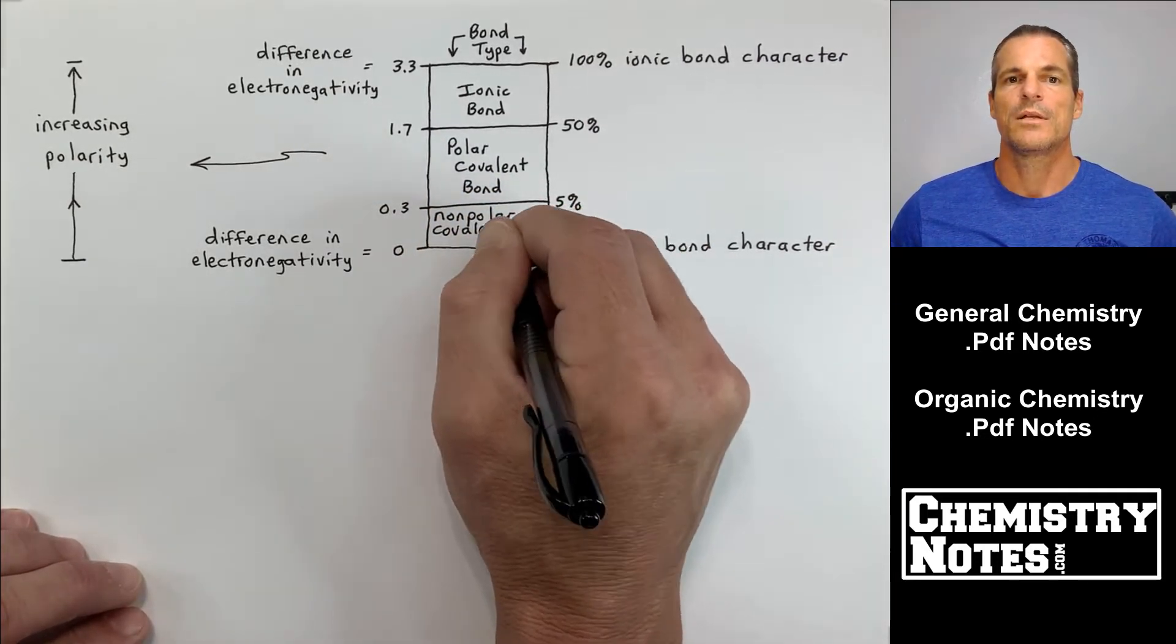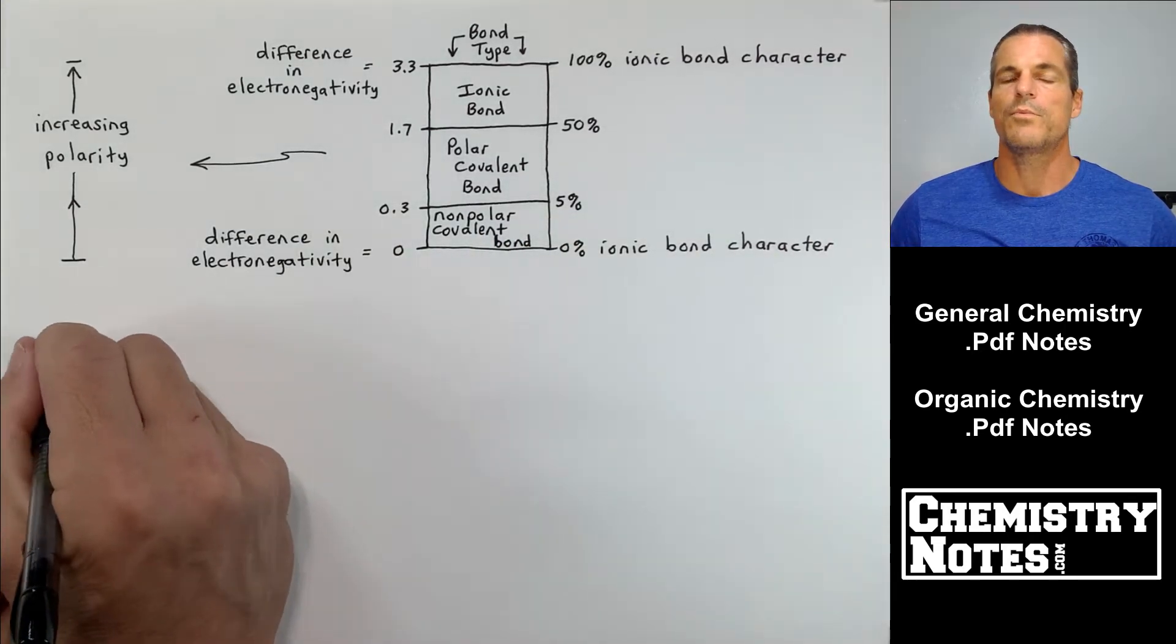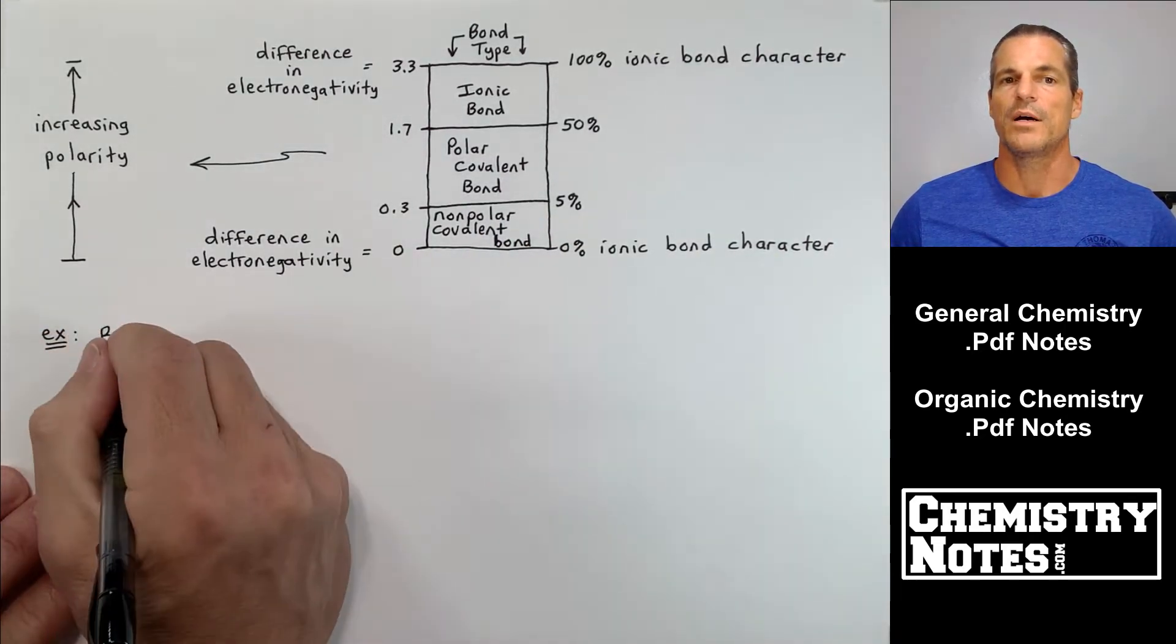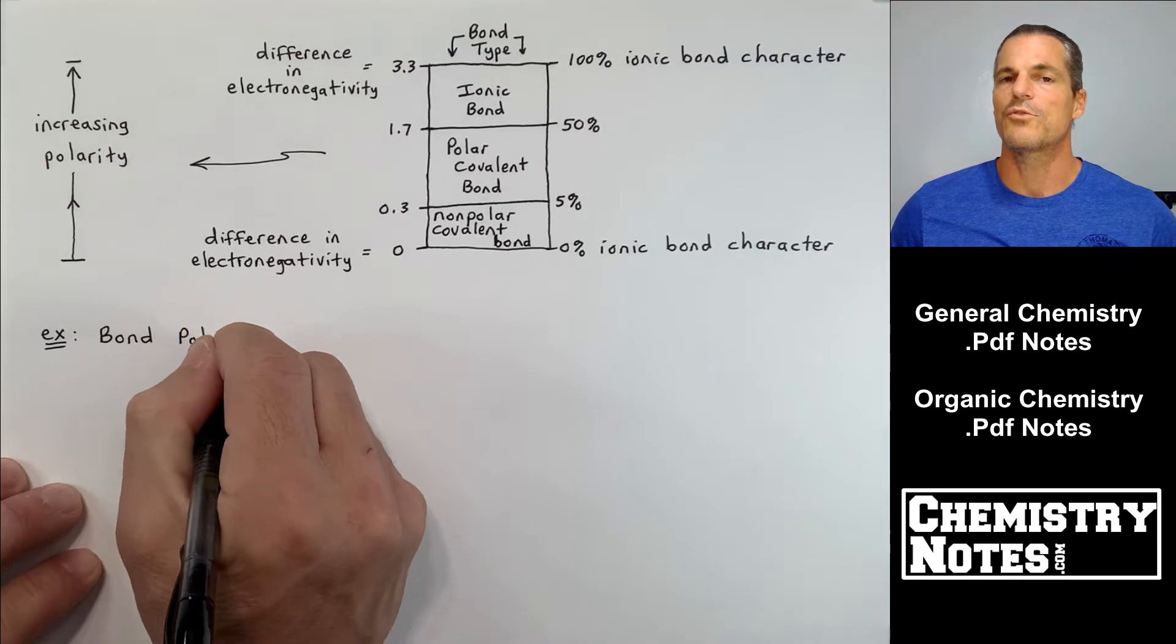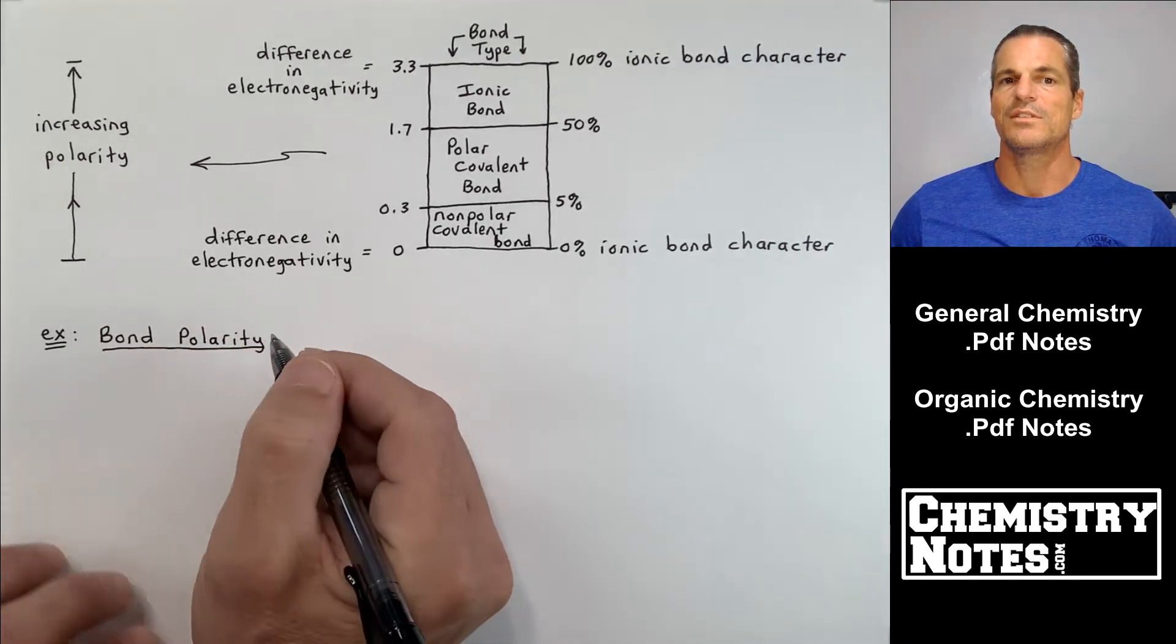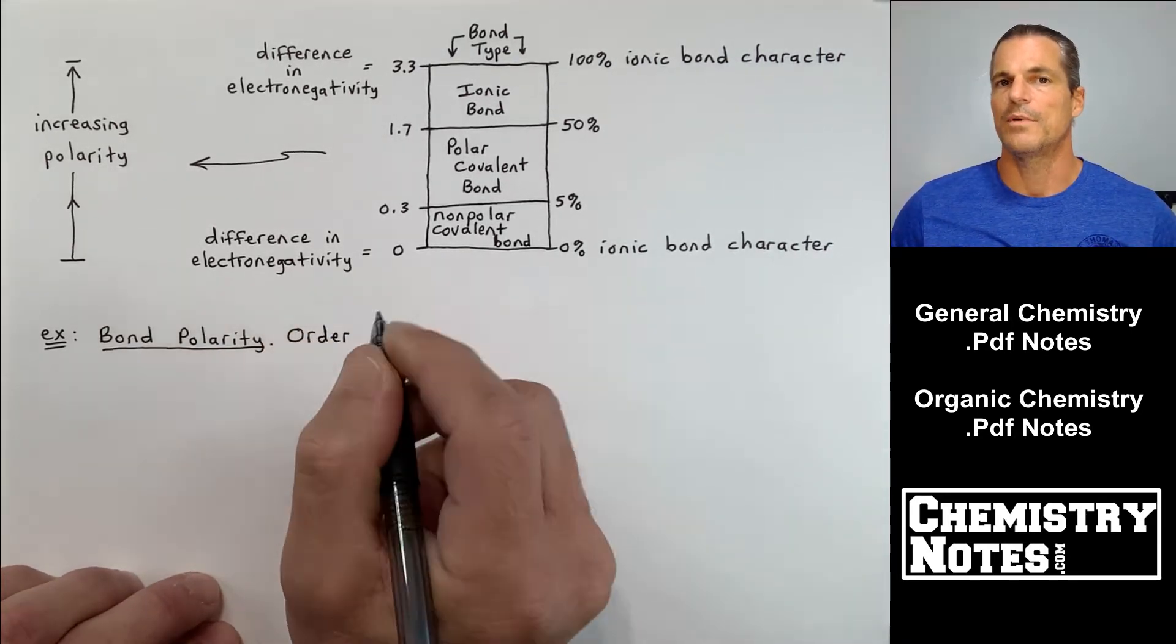Way up there you have extreme polarity to the point where there are ionic bonds. In the middle, between 0.3 and 1.7 are polar covalent bonds. Anything under 0.3 electronegativity difference is a non-polar covalent bond.